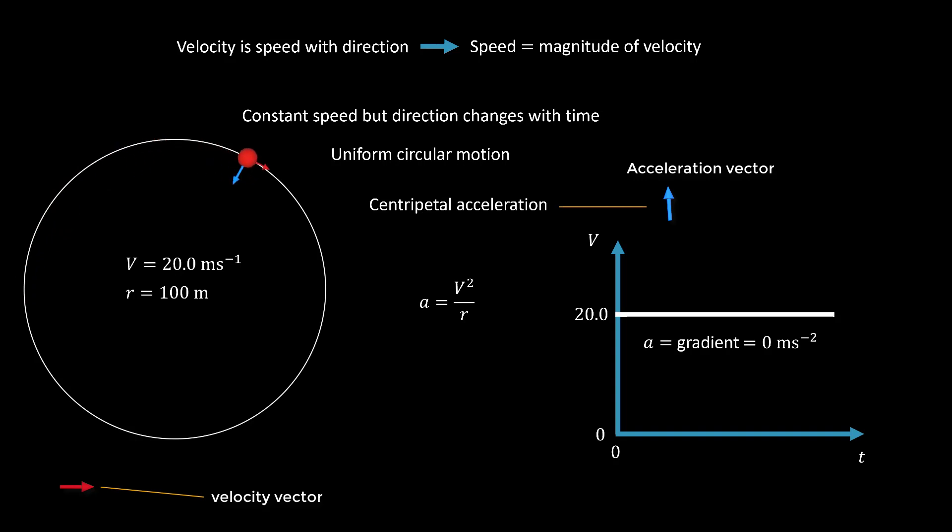So for our case, the speed is 20 meter per second and the radius is 100 meter. So we substitute v equals 20 and r equals 100 meter, and we obtain the acceleration as a equals 4.0 meter per second squared, even though the gradient of our graph is zero.